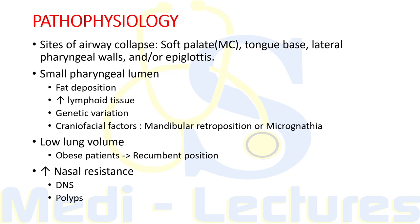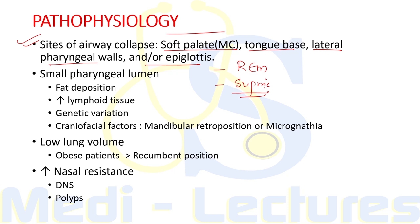The most common site of airway collapse is the soft palate; others include the base of the tongue, lateral pharyngeal walls, and/or epiglottis. This collapse is more severe in REM sleep and supine position — in REM sleep because neuromuscular output to skeletal muscle is least, and in supine position due to gravitational forces.